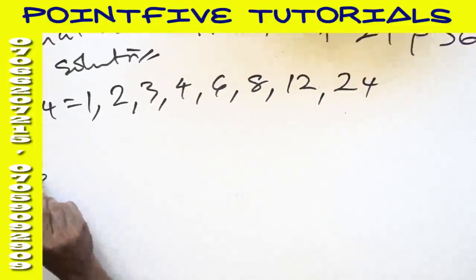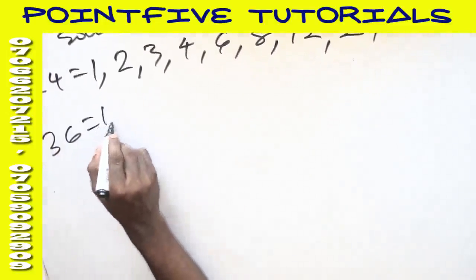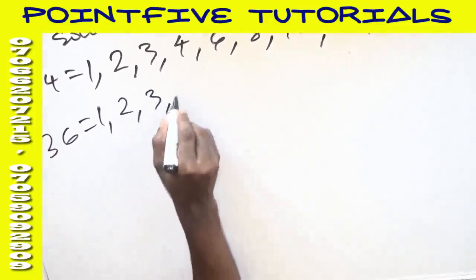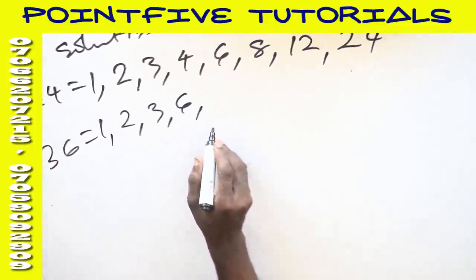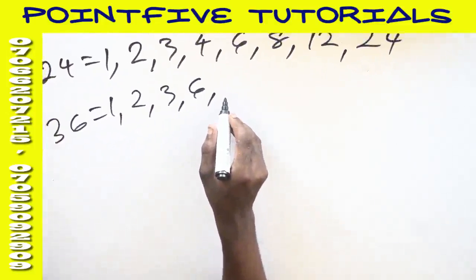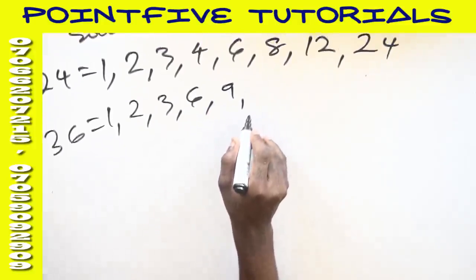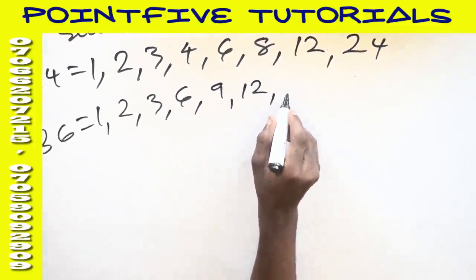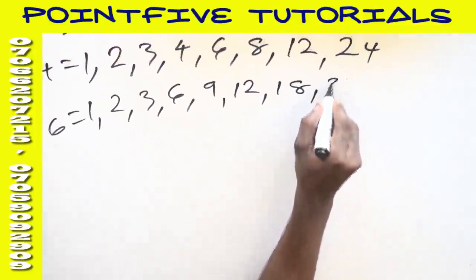Now another one is 36. Factors: 1 can go, 2, 3, 6, 9, 12, 18, and 36. So these are the factors of this.